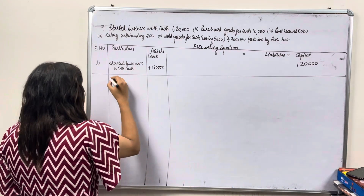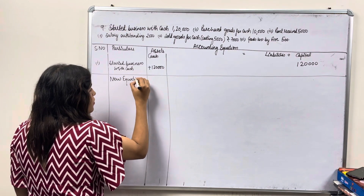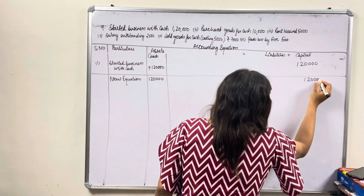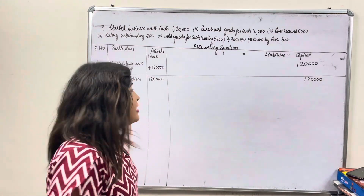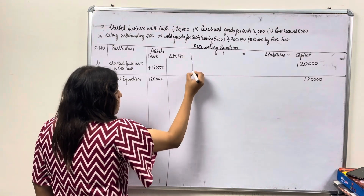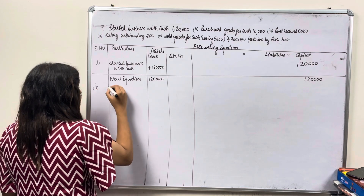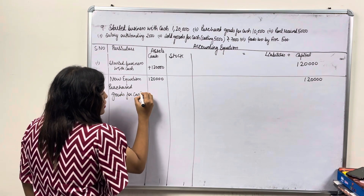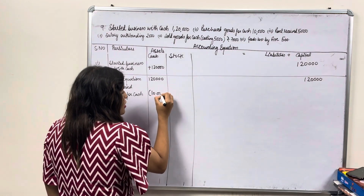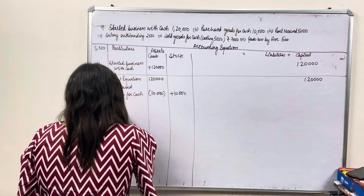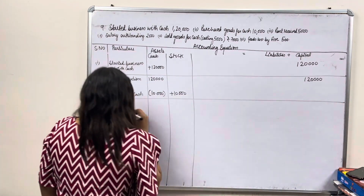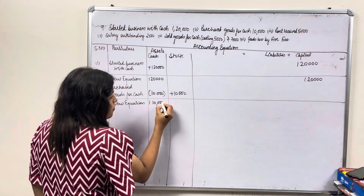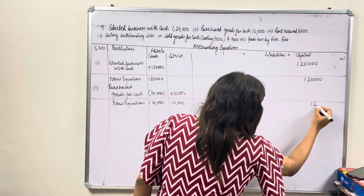New equation values: 1,20,000. Next transaction: 'Purchased goods for cash.' We will make a stock column. Cash minus 10,000, stock plus 10,000. New equation: cash 1,10,000, stock 10,000, capital 1,20,000.